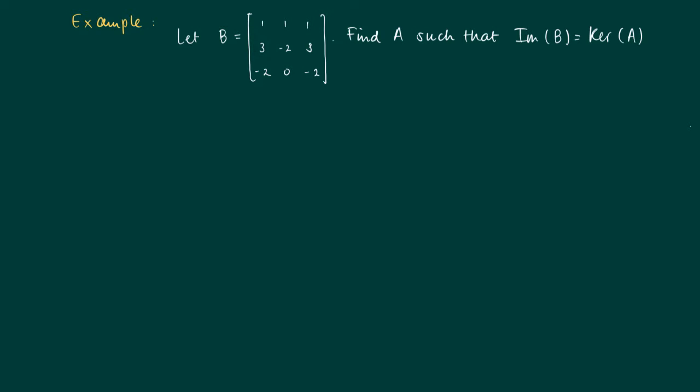Here a matrix B is given. Find the matrix A such that the space spanned by the columns of B, or the image of B, is the kernel of A. Well, what is the solution? To see what kind of vectors are in the image of B.